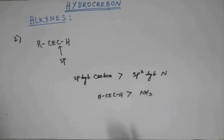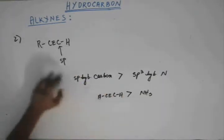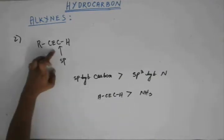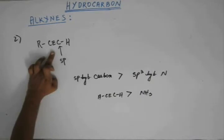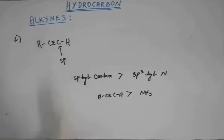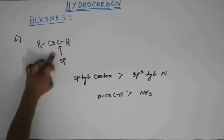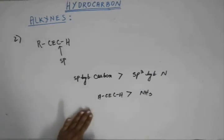But when you increase the percentage s-character of carbon, the electronegativity value also increases. sp hybridized carbon is more electronegative than sp³ hybridized nitrogen. Ammonia is acidic — we know this. Comparing that, acetylene or terminal alkyne is even more acidic than ammonia. So this terminal alkyne will act as an acid for an appreciably stronger base, because of the high percentage s-character of the sp hybridized carbon. Terminal alkyne is more acidic than ammonia.